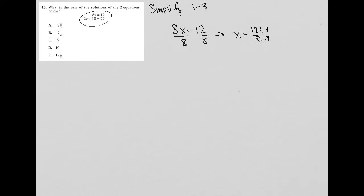And what I get from that is that x is equal to 3 because 12 divided by 4 is 3, and 8 divided by 4 is 2. So I'm going to get that x equals 3 halves.